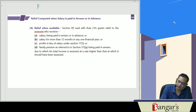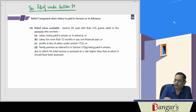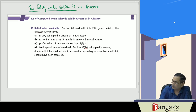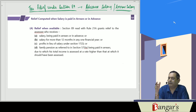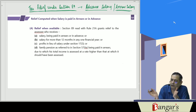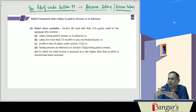We will be discussing tax relief under section 89. If you receive any advance salary or arrear salary, we get relief here because income tax has a slab-based structure. On the first ₹2,50,000 it is nil. If you receive any arrear salary from past years, your tax slab increases — for instance, if you are in the 20% bracket you may shift to the 30% bracket.